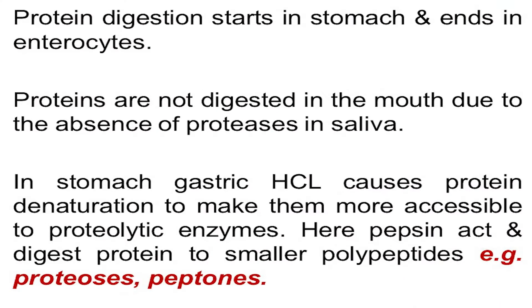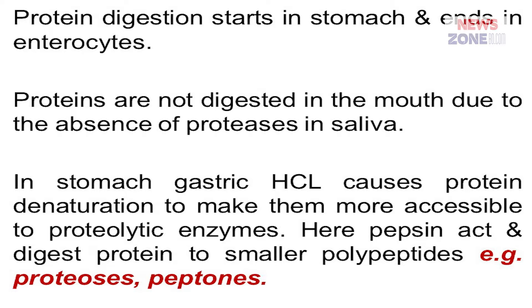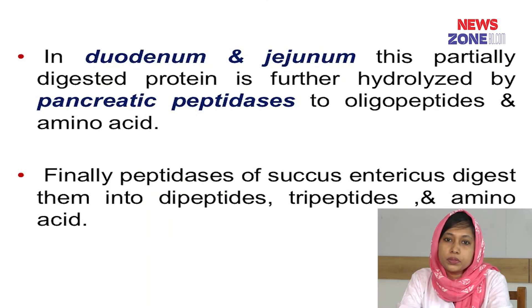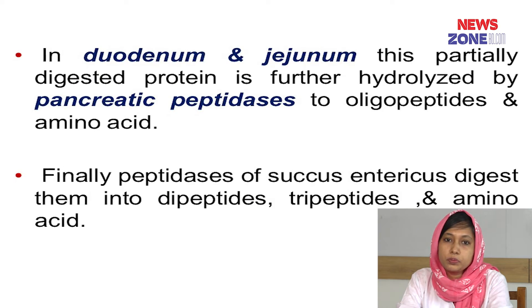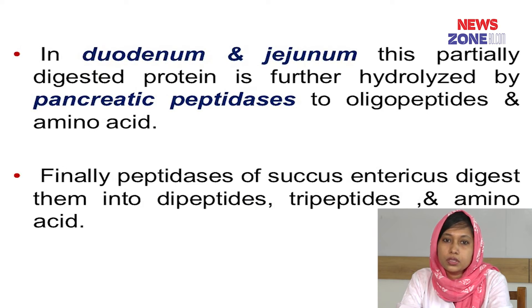What is protein denaturation? Denaturation means disorganization of the native protein structure. Gastric pepsin then acts on this denatured protein to make them smaller polypeptide and peptide fragments, known as proteoses and peptones.